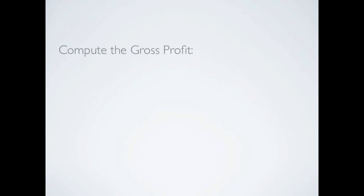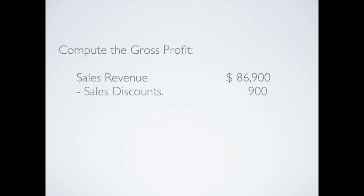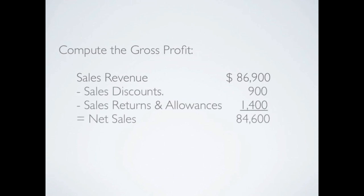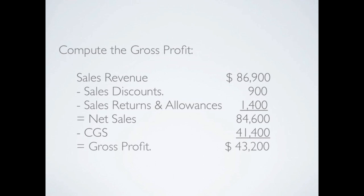Now let's compute Candy Creations' gross profit. Recall your gross profit income statement: we start with sales revenue of $86,900, then subtract our contra revenues to get net sales of $84,600. Then we subtract the balance in cost of goods sold, which was $41,400 — don't forget about the shrinkage adjustment. That gives us a gross profit of $43,200.